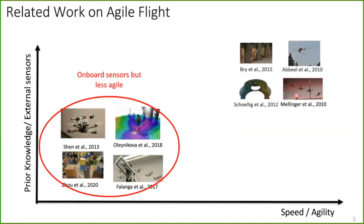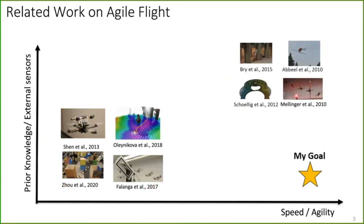On the other side of the plot, we have works that are completely general. They just need on-board sensor observations, no assumptions whatsoever about prior knowledge. But on the other side, they fly very slow. My goal as a PhD student was to develop algorithms that sit in the bottom right part of this plot, that make no prior assumptions but still can fly very fast.